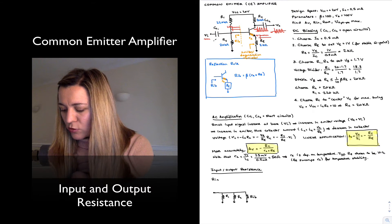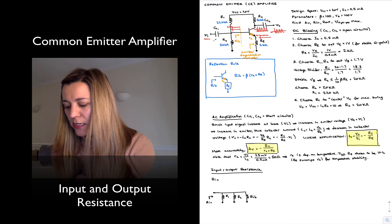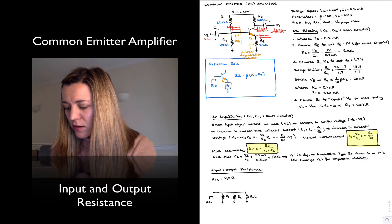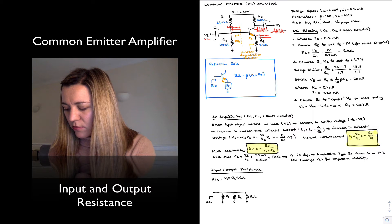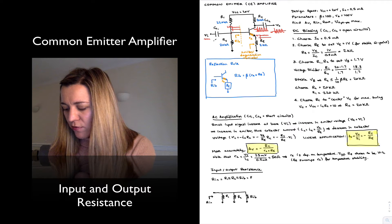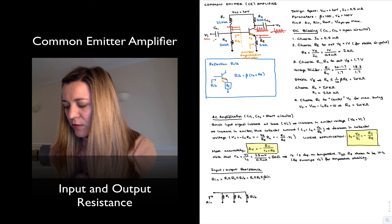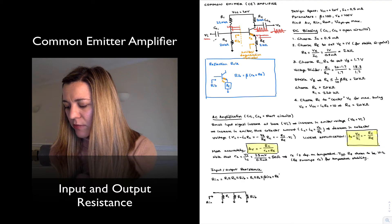And so when I'm looking at the input resistance, which is the resistance looking into that circuit, it's going to be equal to the parallel combination of R1, R2, and Rib. So the parallel combination of R1, R2, and beta times little re plus big Re.